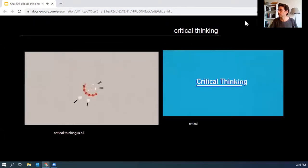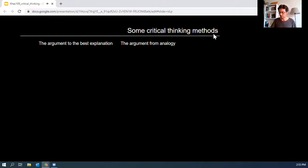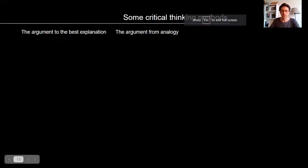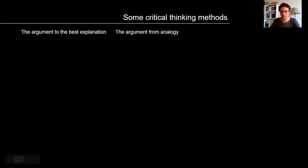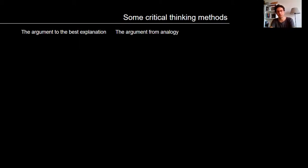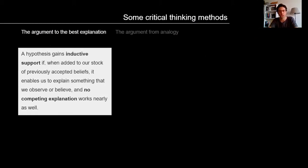Now I'd like to talk about some critical thinking methods. There are multiple methods we can benefit from, but these two are particularly useful for our computational thinking class: the argument to the best explanation, and the argument from analogy.